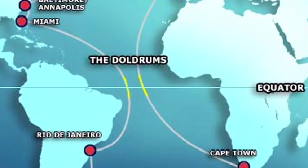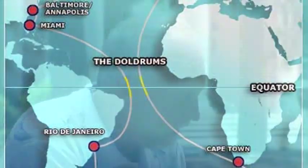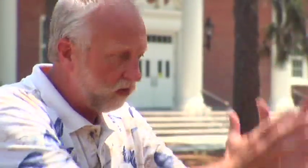These are the doldrums, from back in the old sailing days. And what happens? The air rises — it's going up, it's not going along the Earth's surface.